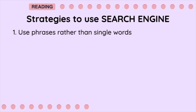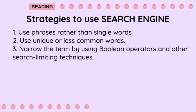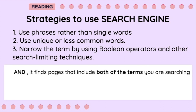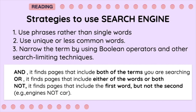1. Use phrases rather than single words. 2. Use unique or less common words. 3. Narrow the term by using Boolean operators and other search-limiting techniques. For example, 'And' finds pages that include both of the terms you are searching. 'Or' finds pages that include either of the words or both. 'Not' finds pages that include the first word but not the second.